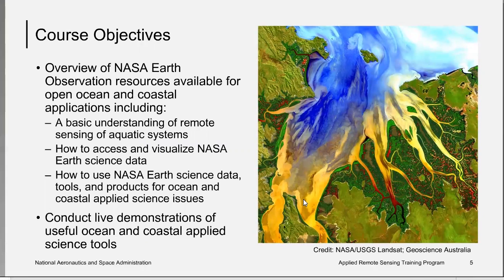We'd like for you to recall from previous weeks the course objectives: to provide an overview of NASA Earth observation resources available for open ocean and coastal applications, including a basic understanding of remote sensing of aquatic systems, how to access and visualize NASA Earth science data, how to use NASA Earth science data tools and products for open ocean and coastal applied science issues, and to conduct live demonstrations of useful ocean and coastal applied science tools.